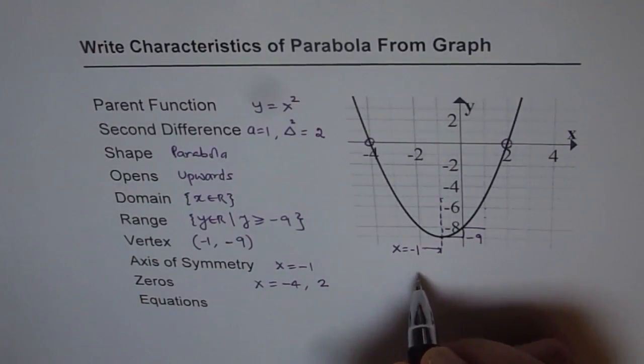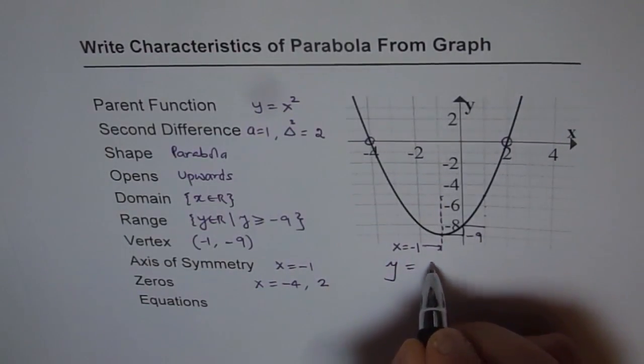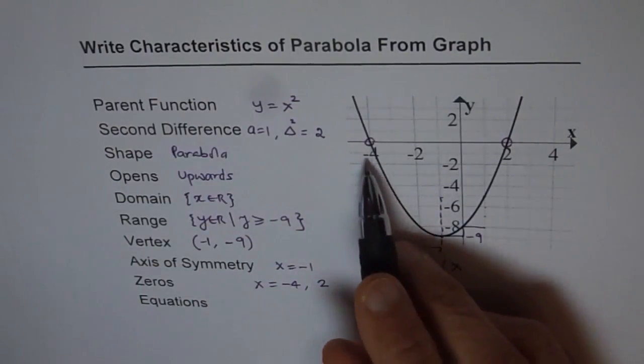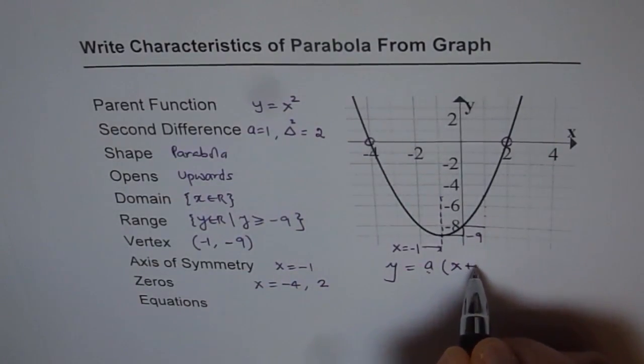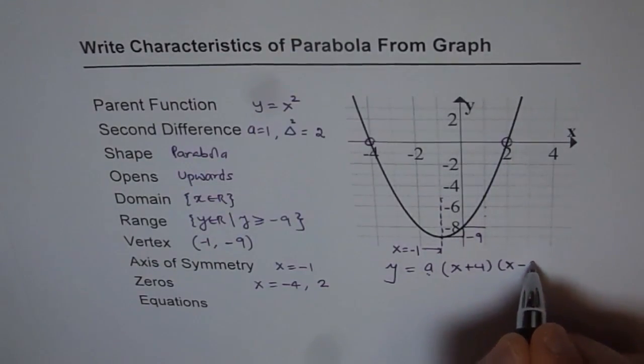So we will work out the equation here and then put it right there. So y equals to a times, don't forget this factor of a, x minus zero which is minus 4 becomes x plus 4 times x minus the other zero which is 2.